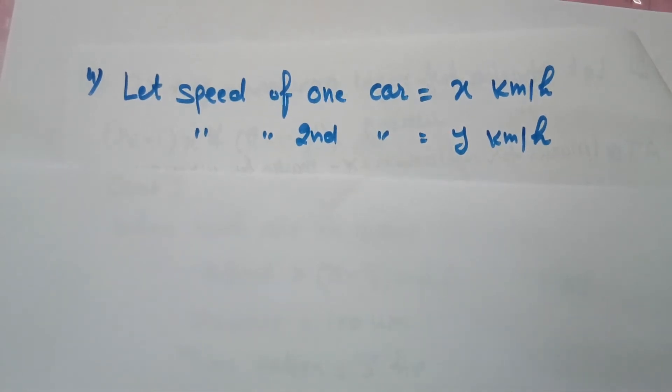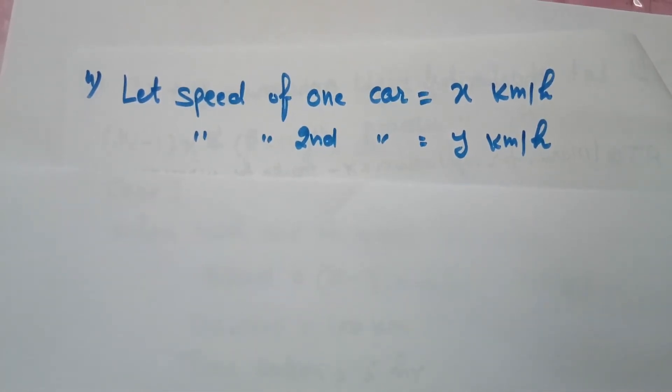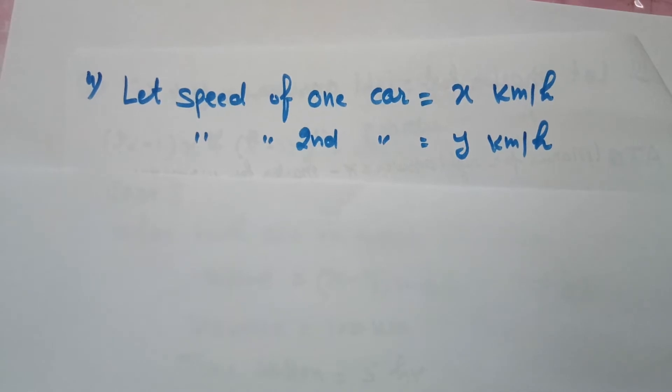Students, in this problem it is given that places A and B are 100 km apart on a highway. One car starts from A and another car starts from B at the same time.